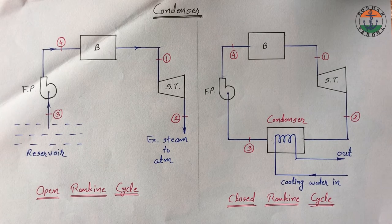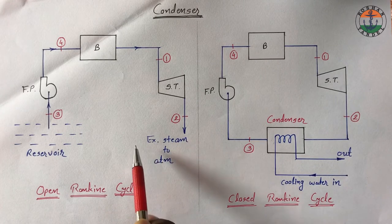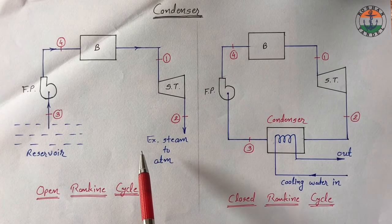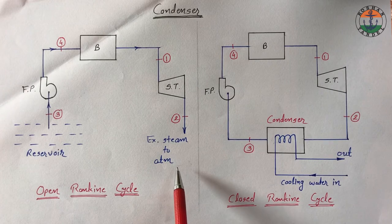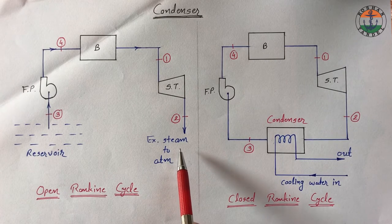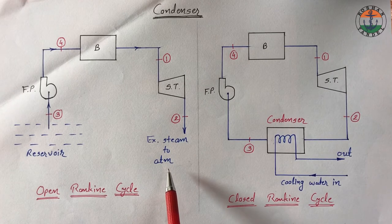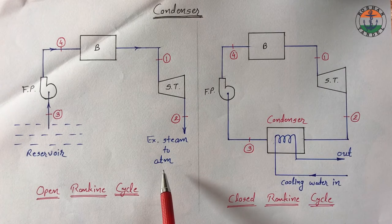Fresh water from reservoir is supplied to boiler with the help of feed pump. If you do not install condenser, then exhaust steam from the steam turbine has to be rejected to the atmosphere. For that, pressure of this steam should be slightly above the atmospheric pressure. Then it will enter into the atmosphere.